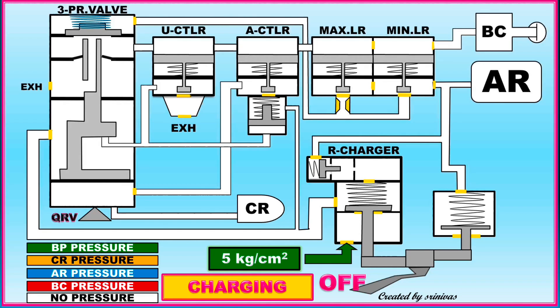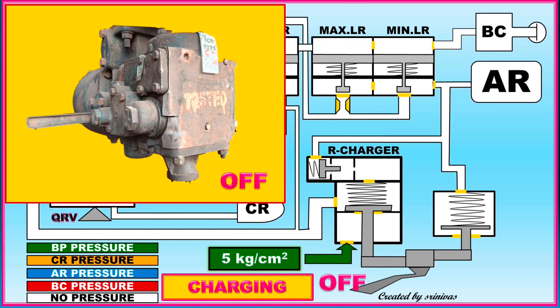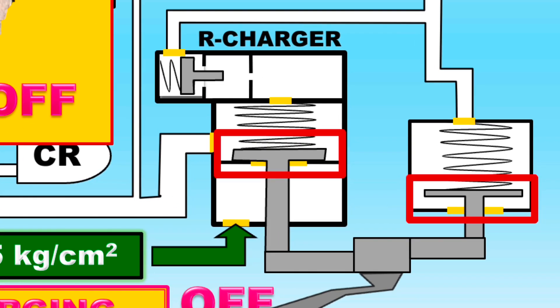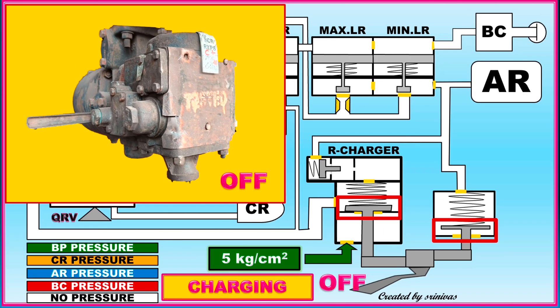First of all, let's see the charging stage of the DV. As shown in this figure, if the DV handle is parallel to the ground, it means that it is in the off position. In this position, the AR pressure is exhausted through the charger. Also, BP pressure does not go into the DV.